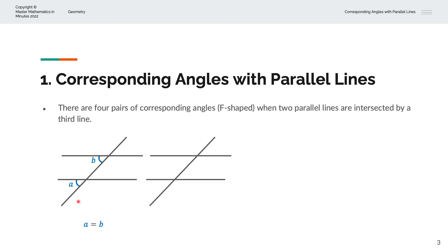In the second example, we have the same set of parallel lines intersected by a third line. The second pair of corresponding angles is: if we were to label this angle as C, the corresponding angle D will be equal to C. Again, we have two horizontal lines and one vertical line making up the shape F.